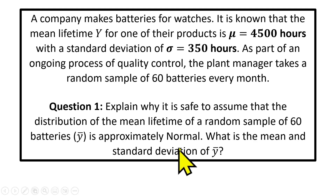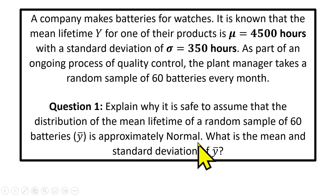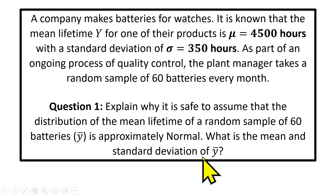The first question was to explain why it is safe to assume that the distribution of the mean lifetime of a random sample of 60 batteries is approximately normal — in other words, why is it safe to assume that the conditions for the central limit theorem to hold actually apply? We'll look at that, and then we're going to calculate the mean and standard deviation of that average, y-bar.